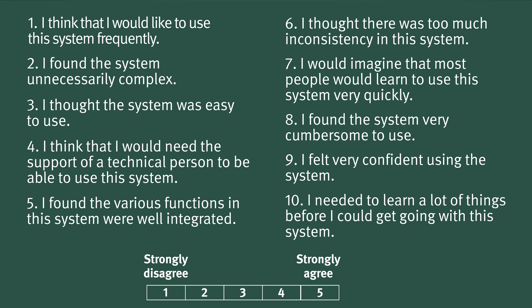The SUS includes 10 questions answered with a 5-point Likert scale, from strongly disagree to strongly agree. The statements in this questionnaire alternate: the odd-numbered ones are positive, and the even-numbered ones are negative. This is done to prevent respondents from cheating by selecting the same answer to all questions, and to counteract people's natural tendency to agree with statements rather than disagree.